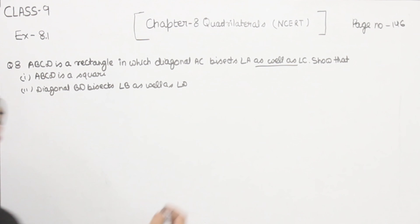Now, angle number 5 is equal to angle number 7 — they are alternate interior angles. Similarly, angle number 6 is equal to angle number 8 by alternate interior angles. If angle 5 equals angle 6 and angle 5 also equals angle 7, that means angle number 6 is equal to angle number 7, by equations 1 and 2.